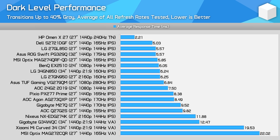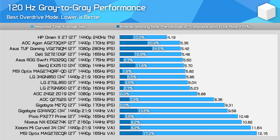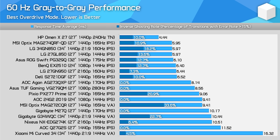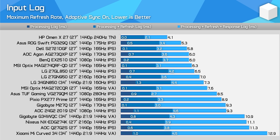Our dark-level performance chart has been updated to use an average of all refresh rates instead of just the maximum refresh rate, which gives us better information for AdaptiveSync gamers. The new method of testing can be quite punishing on unoptimised VA panels. Our main response time comparison charts will also be rounded out with two fixed refresh rate comparisons — 120Hz and 60Hz — giving a direct comparison between different monitors at the same refresh rate, which could provide useful insights to console gamers. We've also updated our input lag chart to show the response time component of latency using our new test methodology results.